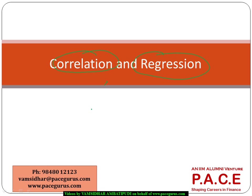Correlation is talking about understanding the relationship between two variables. For example, I want to find out whether there is some kind of relationship between profits and sales. The moment I know what the sales are, can I predict what could be the profits? That is what I would like to look at.